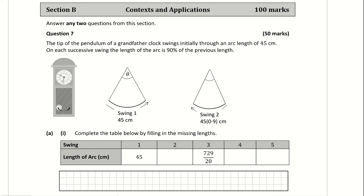Question 7. The tip of the pendulum of a grandfather clock swings initially through an arc length of 45 cm. On each successive swing, the length of the arc is 90% of the previous length. Part 1: complete the table by filling in the missing lengths. On the first swing it's 45 cm as given. The second swing is 90% of the first swing — that's 45 multiplied by 0.9.